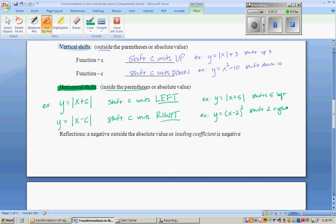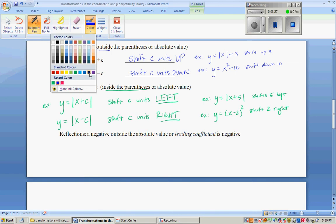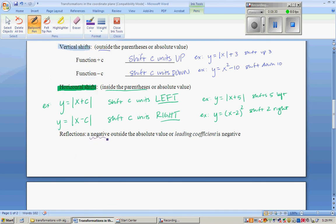Now, the only other thing that you need to know is what happens when, let's use a new color, what happens when you have a negative outside of your absolute value or if your leading coefficient is negative? Well, what happens is you get a reflection. It means that you're going to open down. So, let's say down. Opens down. And an example of that would be if you had a negative absolute value of X instead of being a V, you would turn your V upside down. If you had a negative X squared, if you remember this from last year, it just means your parabola opens down.